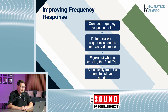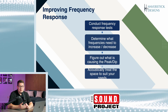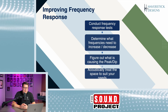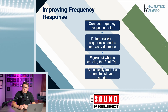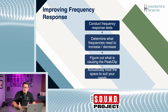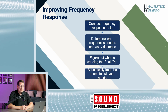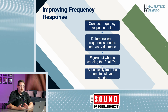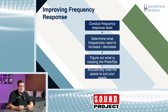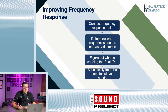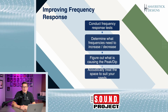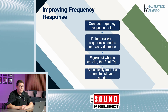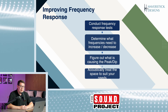Next, determine which frequencies need to increase or decrease by looking at peaks and dips in the frequency response and figuring out why they're occurring. If it's in the lower frequency range, it's most likely driven by a room mode issue. There are various room mode calculators where you can plug in your room dimensions and figure out whether it's an axial mode or a tangential mode. That will determine how you handle the bass trapping. You can also reach out to professionals for help, or compare your frequency response to a room mode calculator to identify what problems you're having.